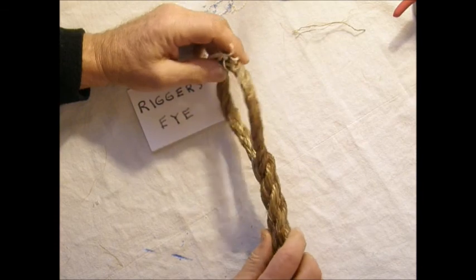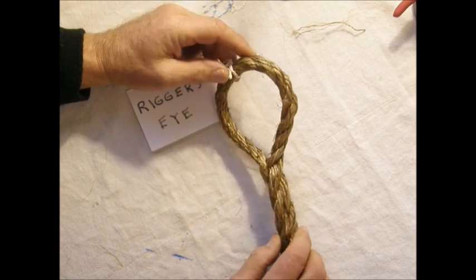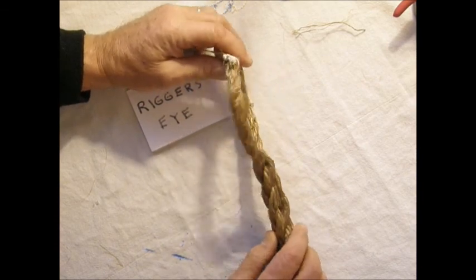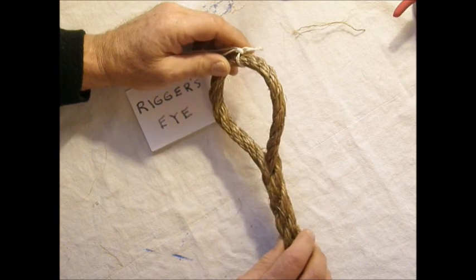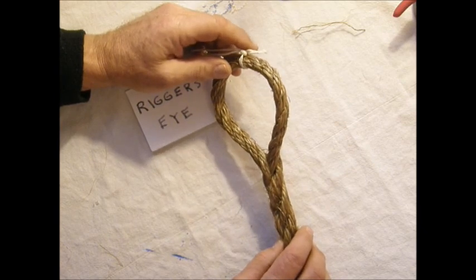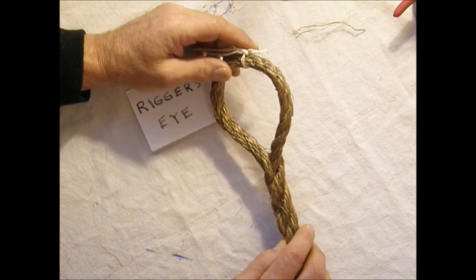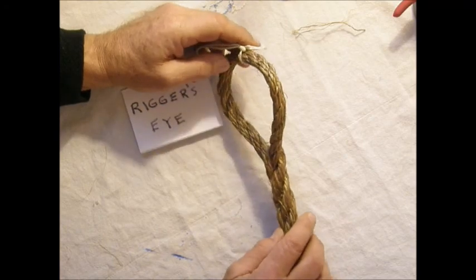In part four we will look at the rigger splice. This splice has the same marrying tucks as the sail maker splice, which we'll look at later, but it is completed with an over-and-under tuck as in the sailor splice.